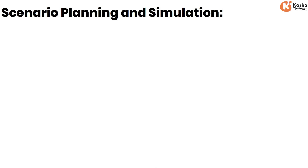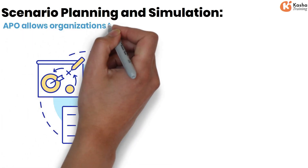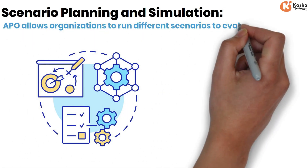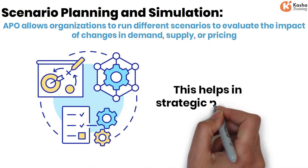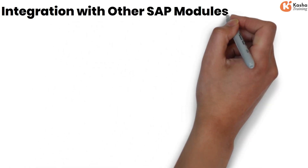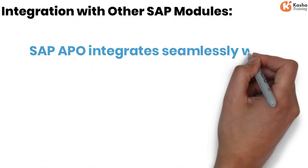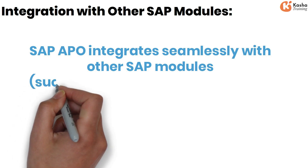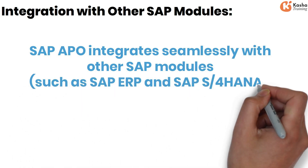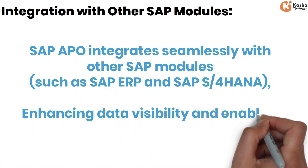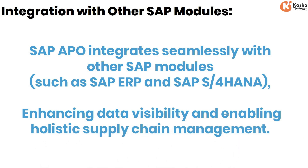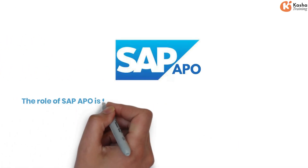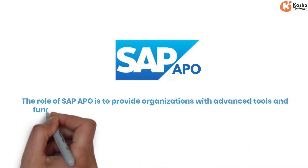Scenario planning and simulation allow organizations to run different scenarios to evaluate the impact of changes in demand, supply, or pricing, supporting strategic planning and risk management. SAP APO integrates seamlessly with other SAP modules such as SAP ERP and SAP S/4HANA, enhancing data visibility and enabling holistic supply chain management. Overall, SAP APO provides organizations with advanced tools to optimize supply chain processes, improve operational efficiency, and enhance customer satisfaction.